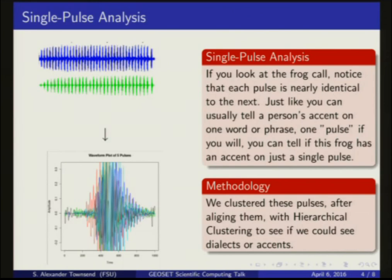Just like you can usually tell a person's accent based on just a single word or phrase — a single pulse, if you will — we wanted to see if you could do the same thing with a frog call. So we extracted the first full pulse, full in the sense that its peak was about as high as the others, and aligned them, giving us this picture here in the lower left-hand corner of the slide. We then computed the distance between each of these pulses and ran this distance matrix through a hierarchical clustering algorithm to see if we could discern distinct groups.